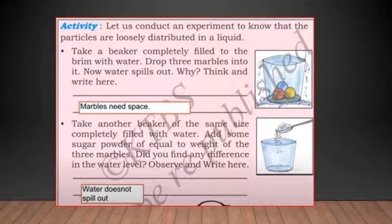There is one last activity on page number 139. Let us conduct an experiment to know that the particles are loosely distributed in a liquid. Take a beaker completely filled to brim with water. Drop three pebbles into it. Now water spills out. Why? Think and write the answers. Because the marbles that you put inside the beaker need space.